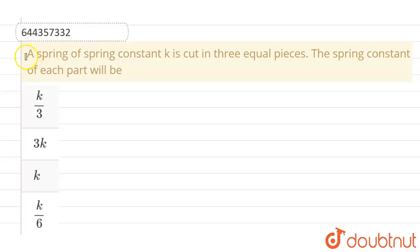Hello everyone. If we talk about this question, a spring of spring constant k is cut into three equal pieces. The spring constant of each part will be - and the given options are k by 3, 3k, k or k by 6.